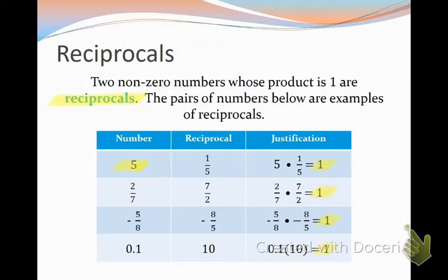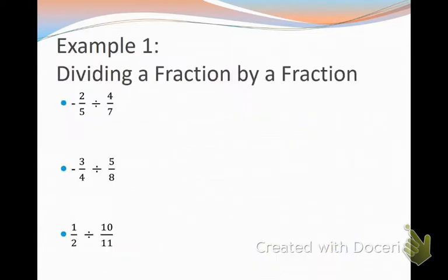So in example 1, I'm dividing a fraction. I have negative 2 fifths divided by 4 sevenths. Go ahead and write that down. Negative 2 fifths divided by 4 sevenths. And I'm going to use this method that is oftentimes taught in lower grades, the KFC method.